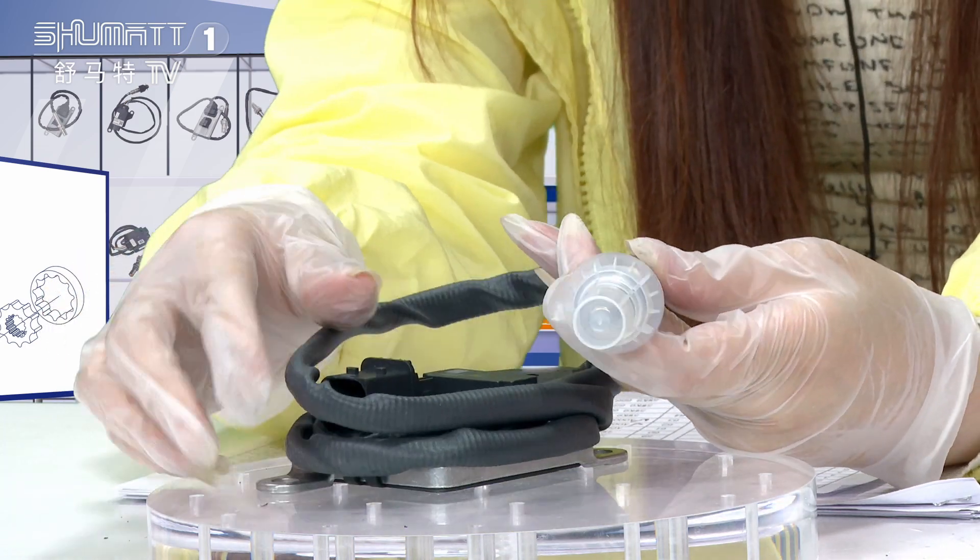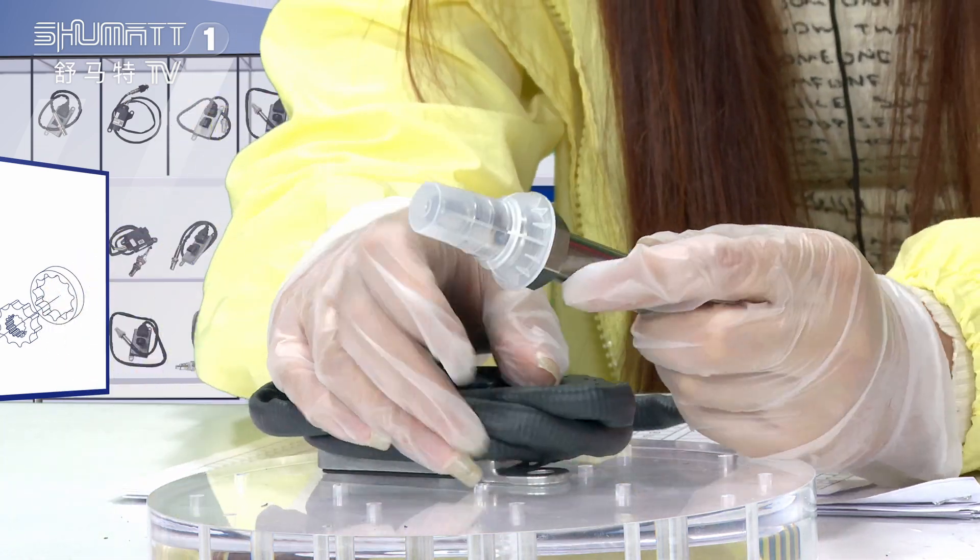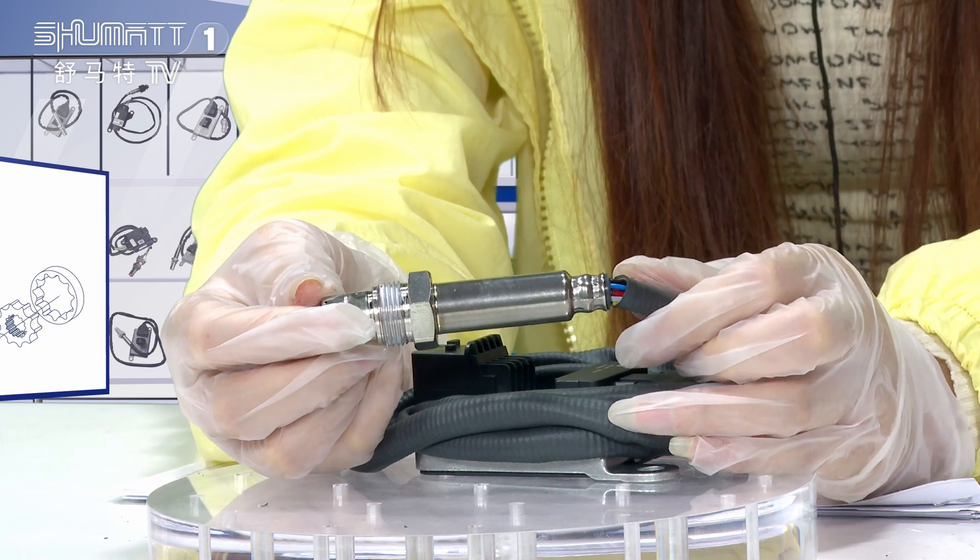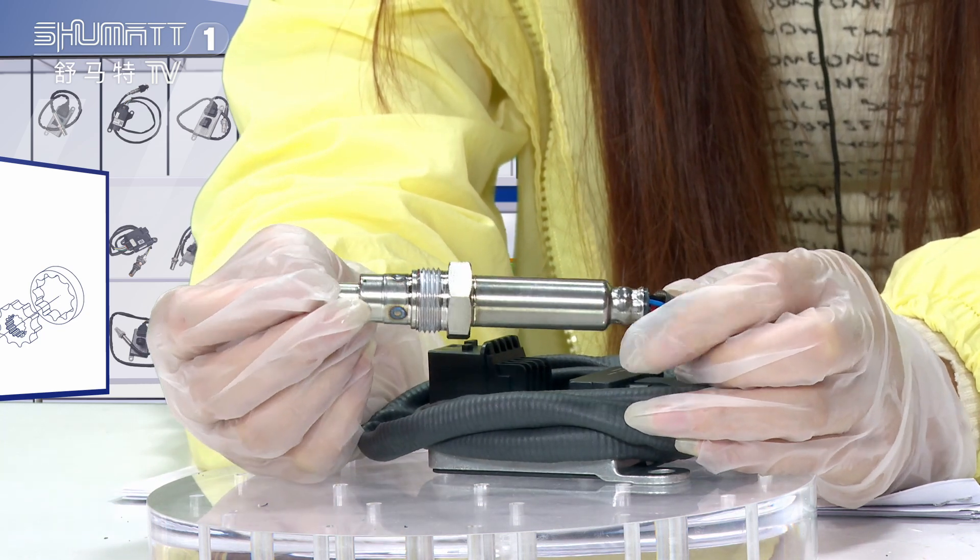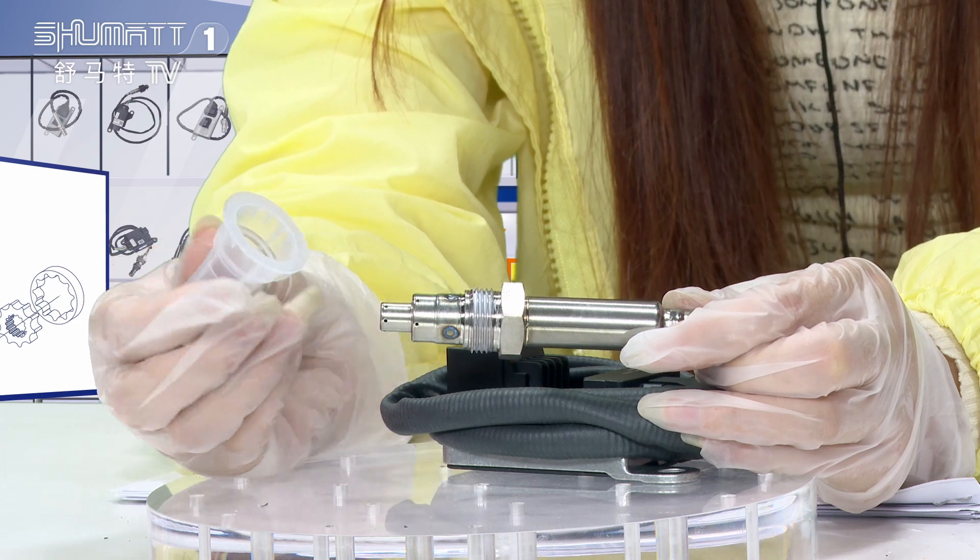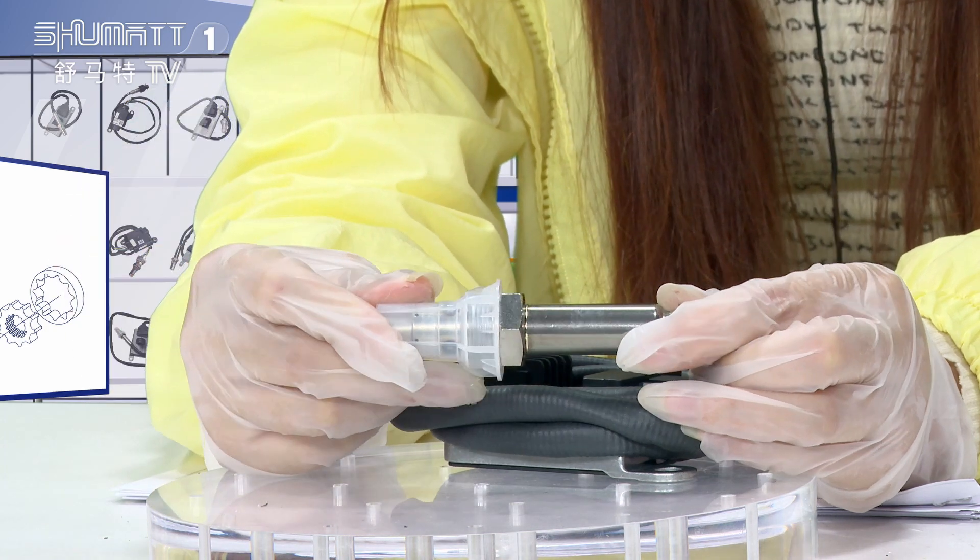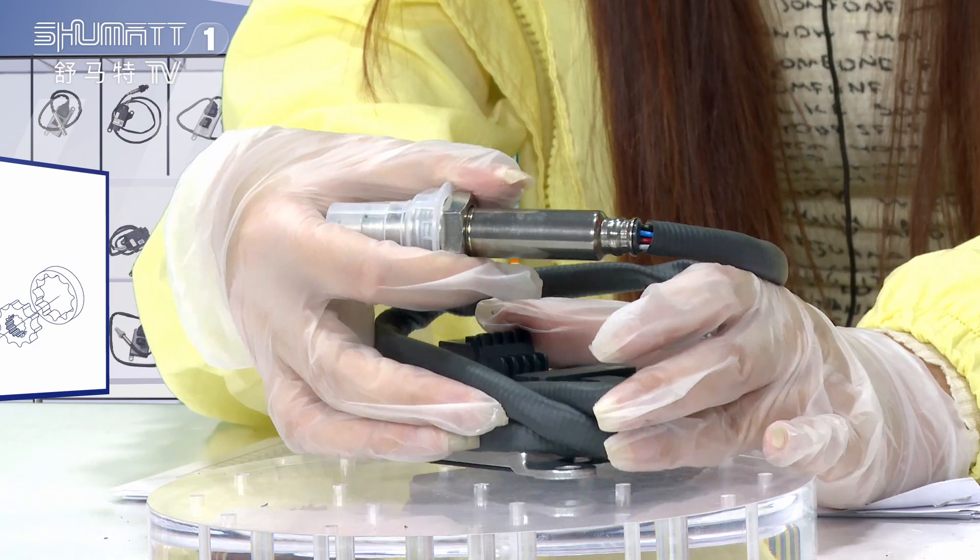That's the first part - the sensor probe. Generally, we use a protection cover to protect this side. The second part is the wire harness.